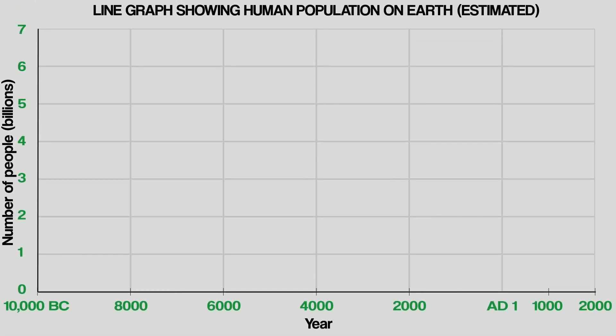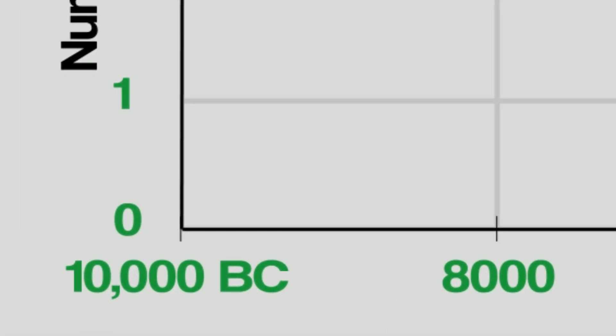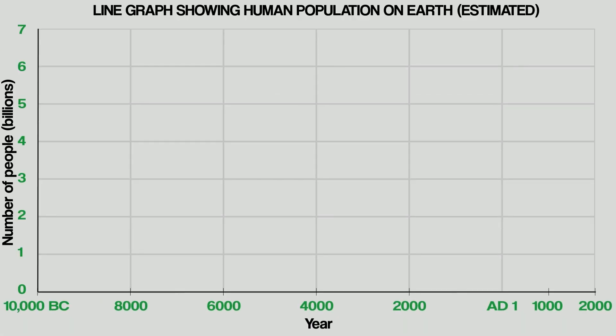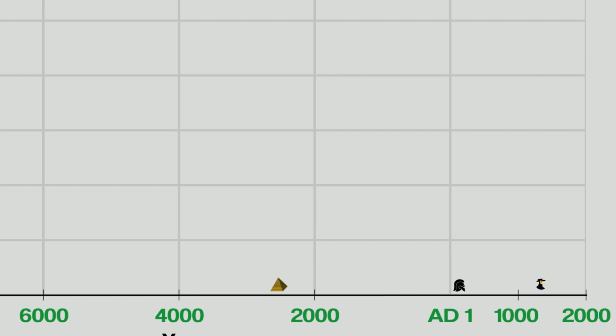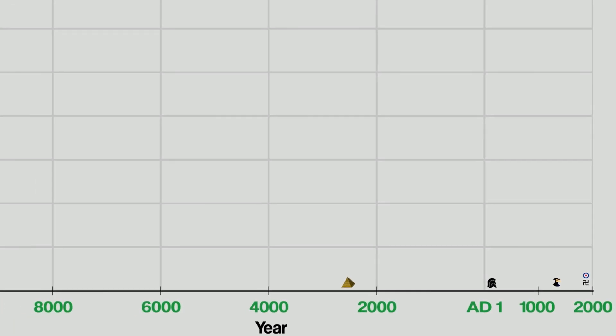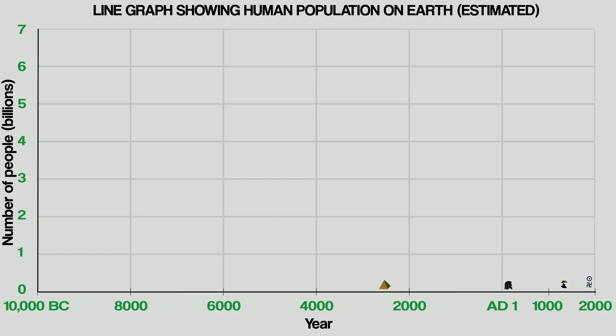This graph shows that journey from 10,000 BC, which was over 12,000 years ago, all the way up to just after 2000 AD. Just to give you an idea of how long that is: here is when the pyramids were built, here is the peak of the ancient Roman civilization, here is the Black Death, and here are the two World Wars. And obviously just after the year 2000 is the present day. We are now going to add our human population onto this graph and show how it has grown over time.